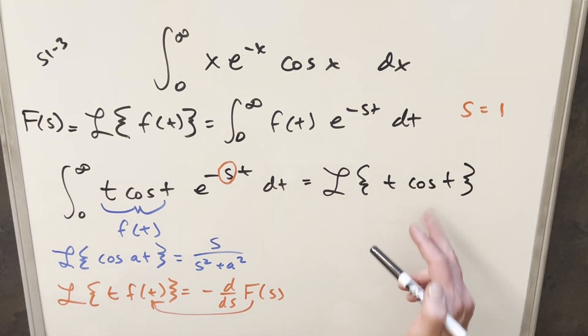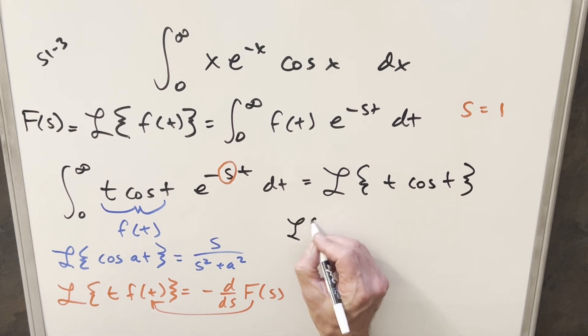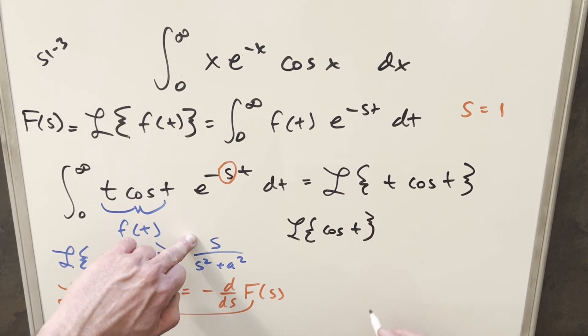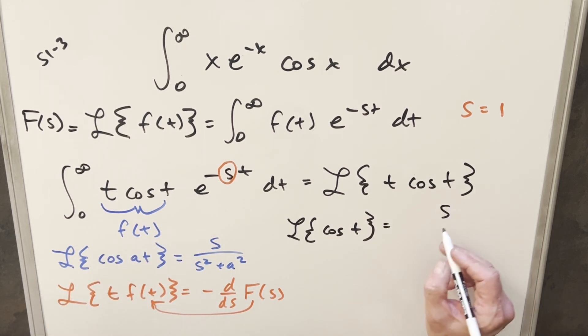So with these two formulas, we have everything we need to calculate this, because first, for the Laplace transform of cosine of t, we just have a 1 for our a value on this. So using this first formula here, this is going to be the same thing as s over s squared plus 1 squared. We'll just write that as s squared plus 1.